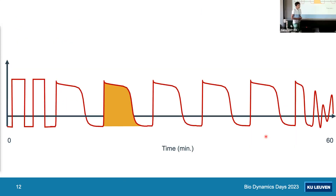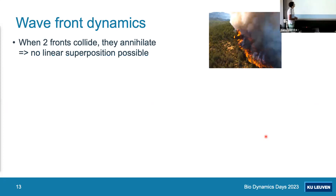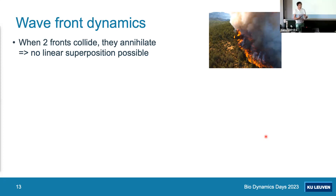The second message is that biology exhibits many nonlinear structures that prevent linear superposition in general, but perturbation theory and linear superposition can be used to find their slow drift. Wavefronts in the heart share many characteristics with a bushfire: both are reaction-diffusion fronts, and when two such waves meet they annihilate each other. Unlike electromagnetic or shallow water waves, you cannot simply superimpose two colliding cardiac wavefronts — a different approach is needed.